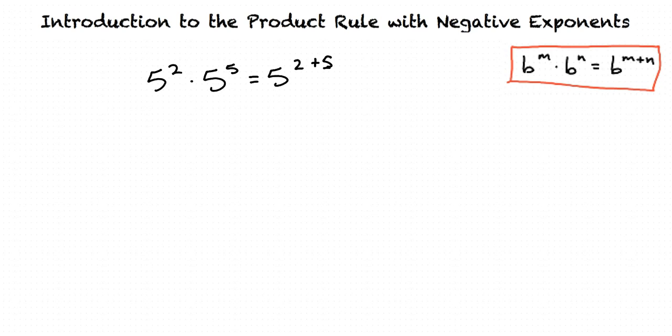For example, 5 squared times 5 to the fifth equals 5 to the 2 plus 5 power, which equals 5 to the seventh.